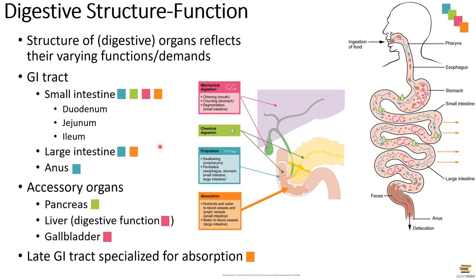In addition to the GI tract, there are accessory organs supporting the function of the intestines — specifically the pancreas, which secretes enzymes assisting in chemical digestion. The pancreas secretes digestive enzymes into the duodenum to help in chemical digestion. We also have both the liver and the gallbladder, which play a role in mechanical digestion through the production of bile. These late parts of the GI tract are really specialized for absorption in a way we didn't see in the esophagus and stomach — this is where things move from the interior of the lumen into the body, hit the bloodstream, and get to the cells of your body.